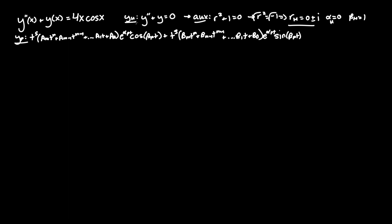α_p = 0 since there's no exponential term — e^0 = 1 — and β_p = 1 since it's just 1·cos(x). So α_particular = 0 and β_particular = 1, and we let t = x to avoid rewriting everything.